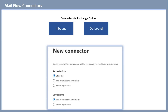This screenshot is taken from Exchange Online, from where you create Mailflow Connectors. Here we can see we can create connectors for emails from Office 365 to your organization's email server, from Office 365 to a partner organization, from a partner organization to Office 365, or from your organization's email server to Office 365. But let's understand what type of connector is required in what type of scenario.